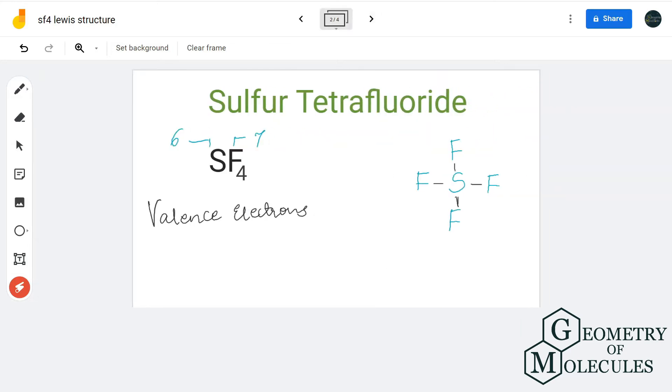Sulfur has six valence electrons, whereas fluorine has seven. As we have four fluorine atoms, we multiply this by four, giving us 28. In total, there are 34 valence electrons for SF4.